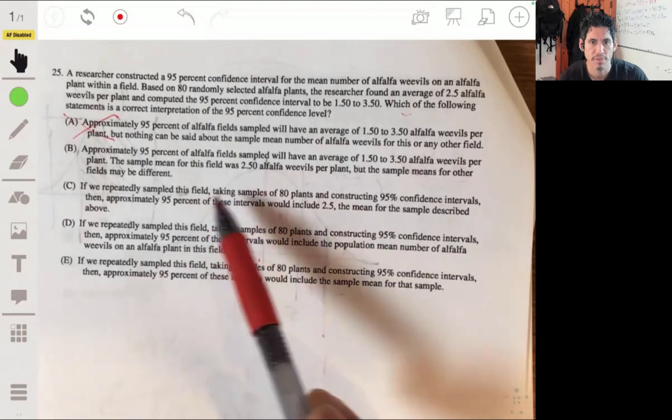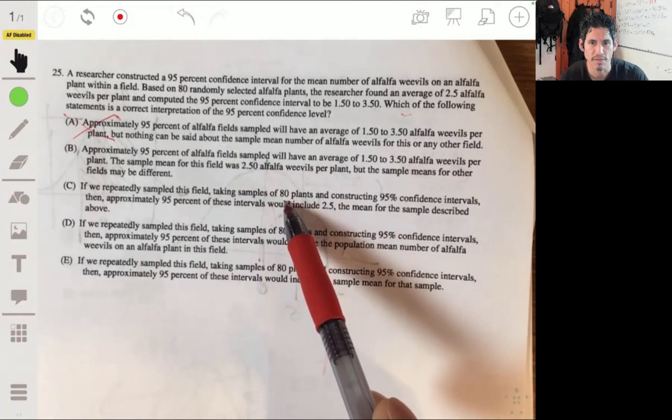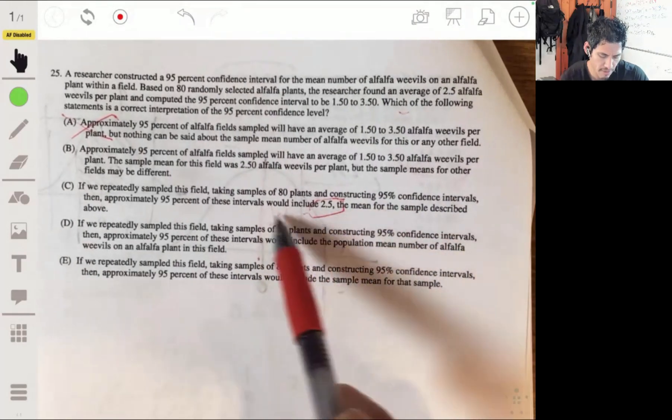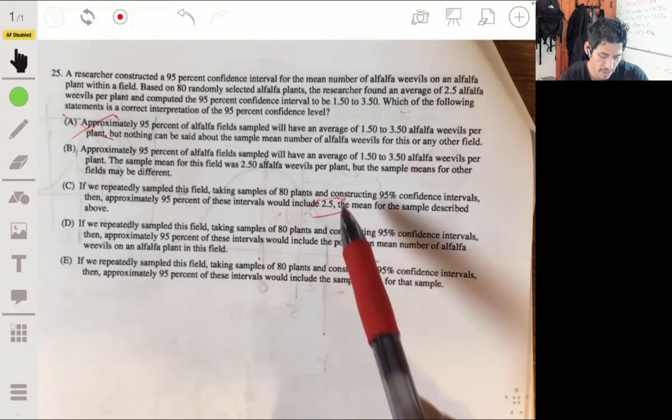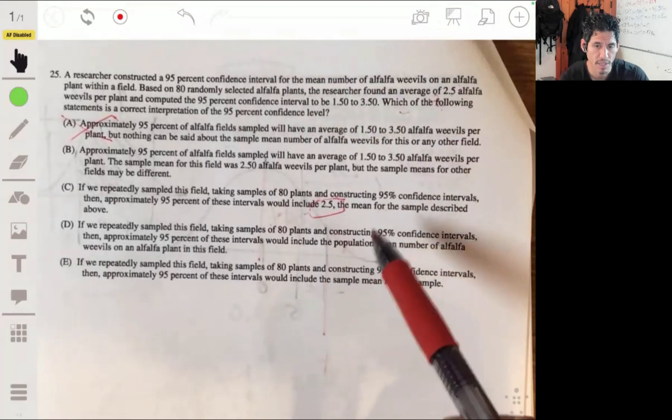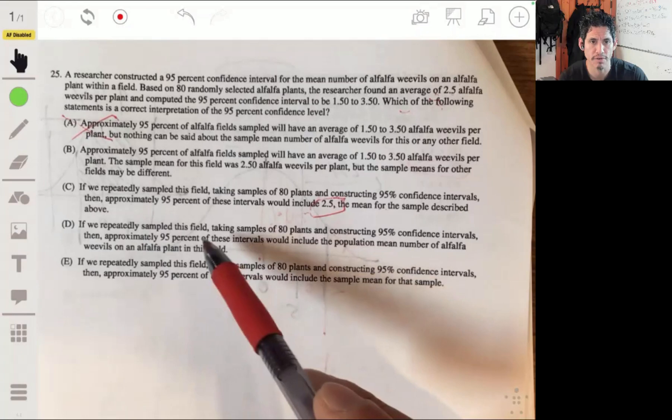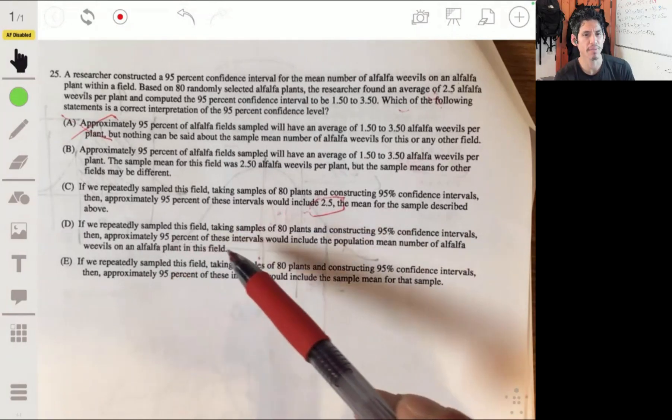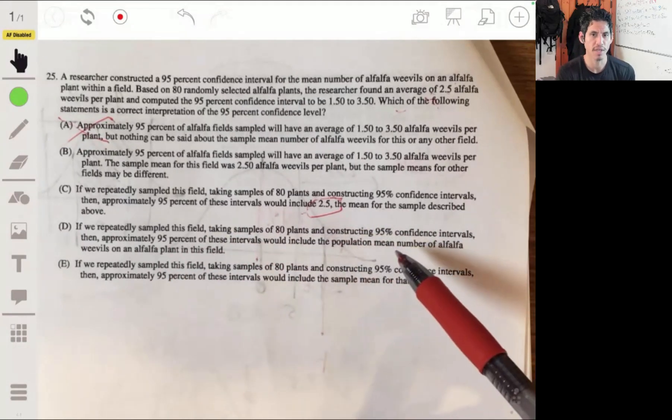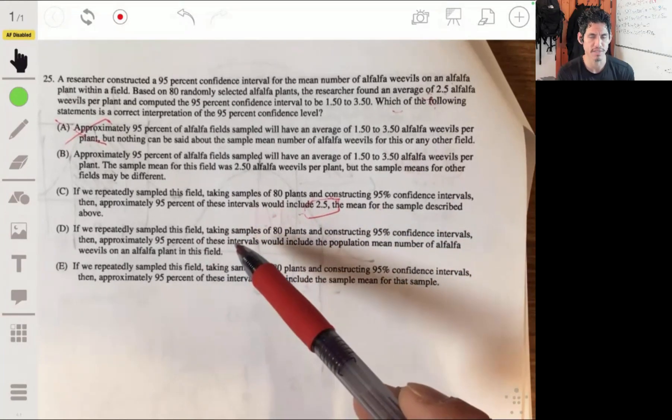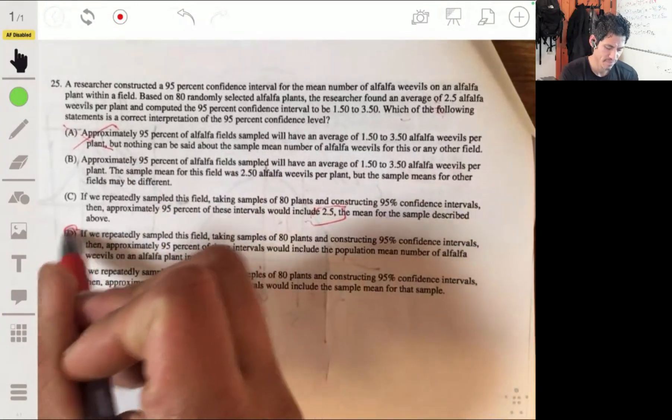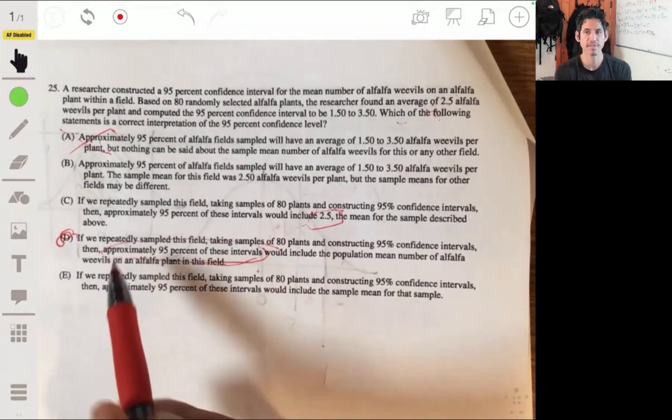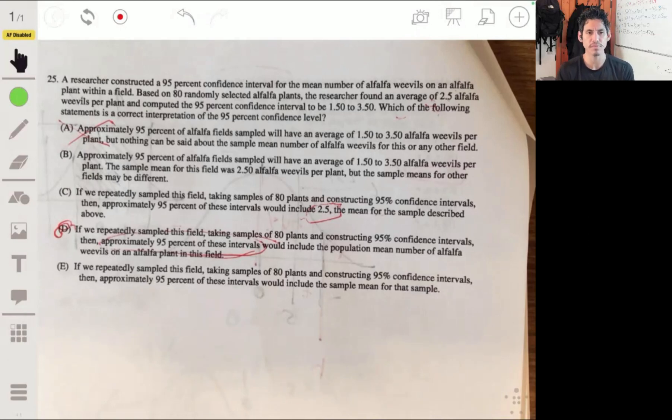This is a tricky one, but it's not going to be bad. They try to get you. Again, we don't know if that's the true average. That's just our estimate. If we repeatedly sampled this field, taking samples of 80 plants and constructing 95% confidence intervals, then approximately 95% of those intervals would include the population mean number of alfalfa weevils on an alfalfa plant in this field. Yeah, so it's D. This is kind of probably the key sentence: approximately 95% of these intervals.